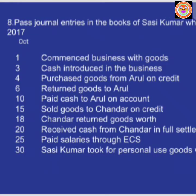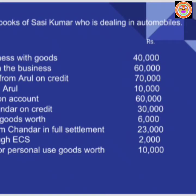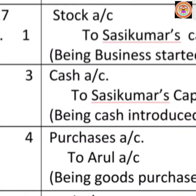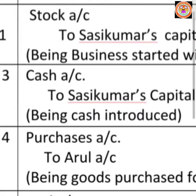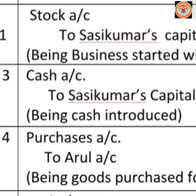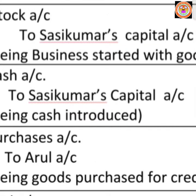October 3 — cash introduced in the business Rs.60,000. Sassi Kumar brings the capital in the form of cash. Write the date. Cash comes into the business, so apply the real account rule: debit what comes in, credit what goes out. Cash comes in, so cash account is debited. He brings cash in the name of capital, so apply the personal account rule — debit the receiver, credit the giver. Here Sassi Kumar is the giver, so write 'To Sassi Kumar Capital Account.'